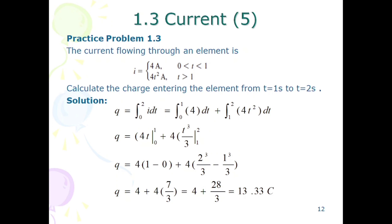Now we have to split the integral: from 0 to 1, the value is 4, and from 1 to 2, the value is 4t². We find the integral — 4 comes outside, and the integral of dt equals t, evaluated with upper limit 1 and lower limit 0.